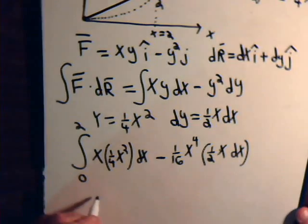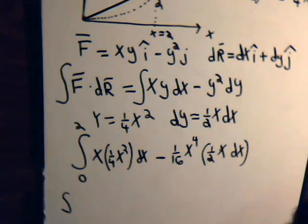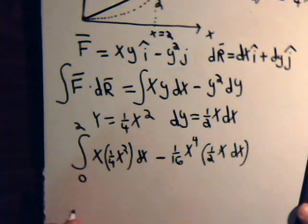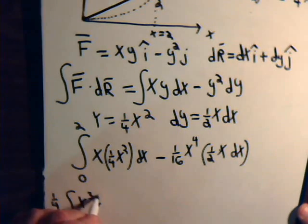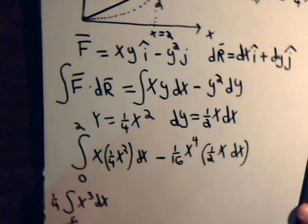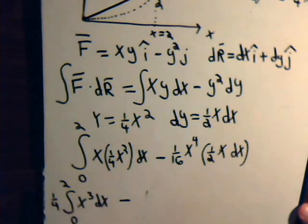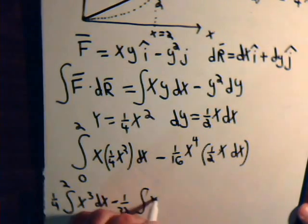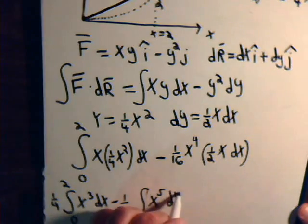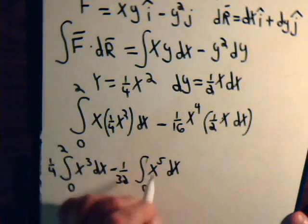So, let's see, we have the integral. This will be one-fourth x cubed dx, x goes from zero to two. And then, here we will have minus integral. Let's make this better. 1 over 32, x to the fifth dx, and x again goes from zero to two.